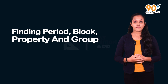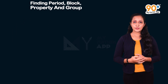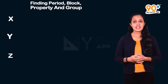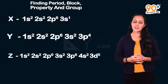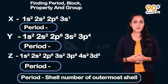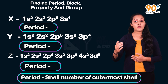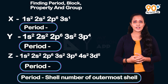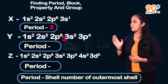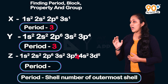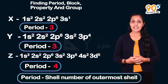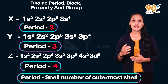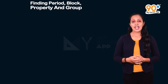Moving on to the next important topic: finding period, block, property, and group from subshell electronic configuration. For three elements X, Y, and Z, the period is determined by the highest shell number in the configuration. For element X, highest shell number is 3, so period is 3. For elements Y and Z, highest shell number is 4, so period is 4.